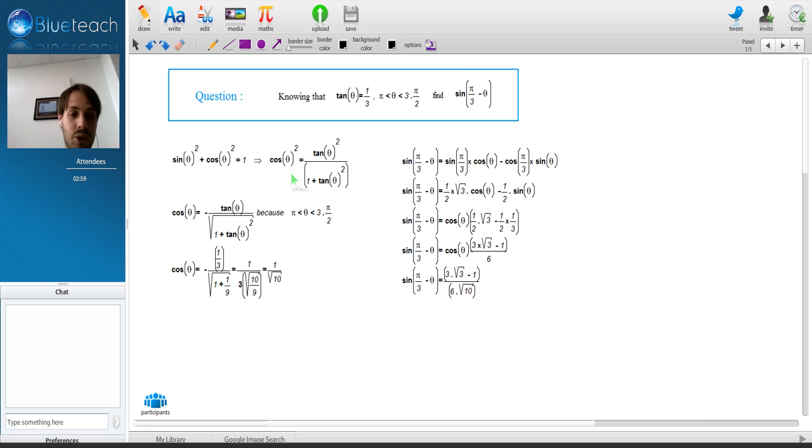When we take the square root of this expression, we put a minus before it. So cosine theta equals minus tangent theta divided by square root of 1 plus tangent theta squared.